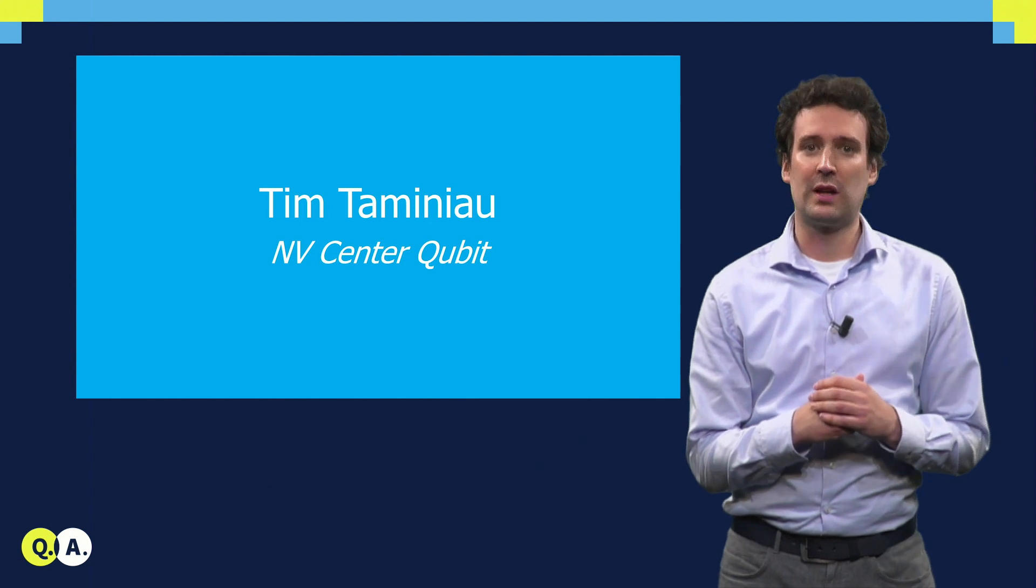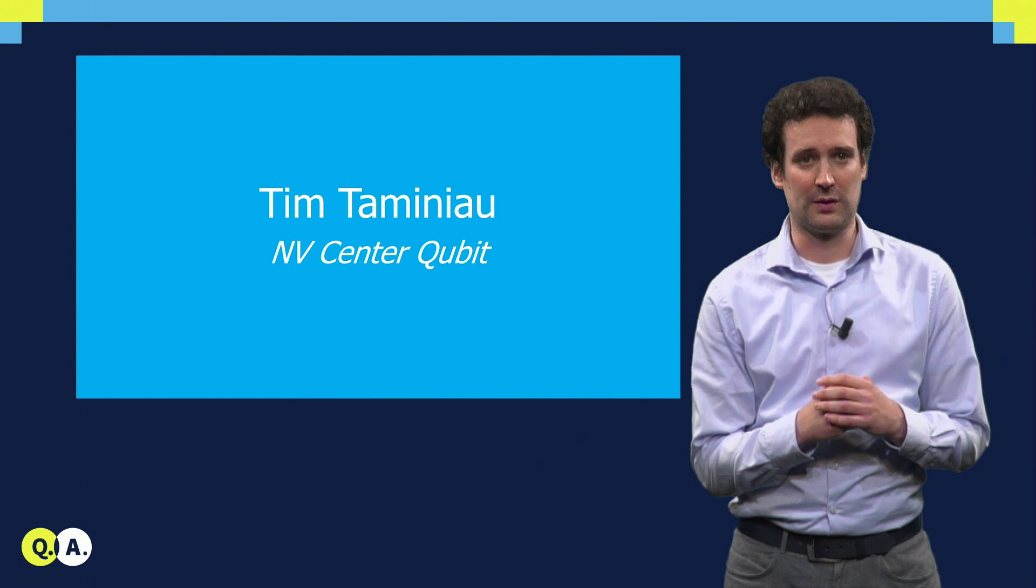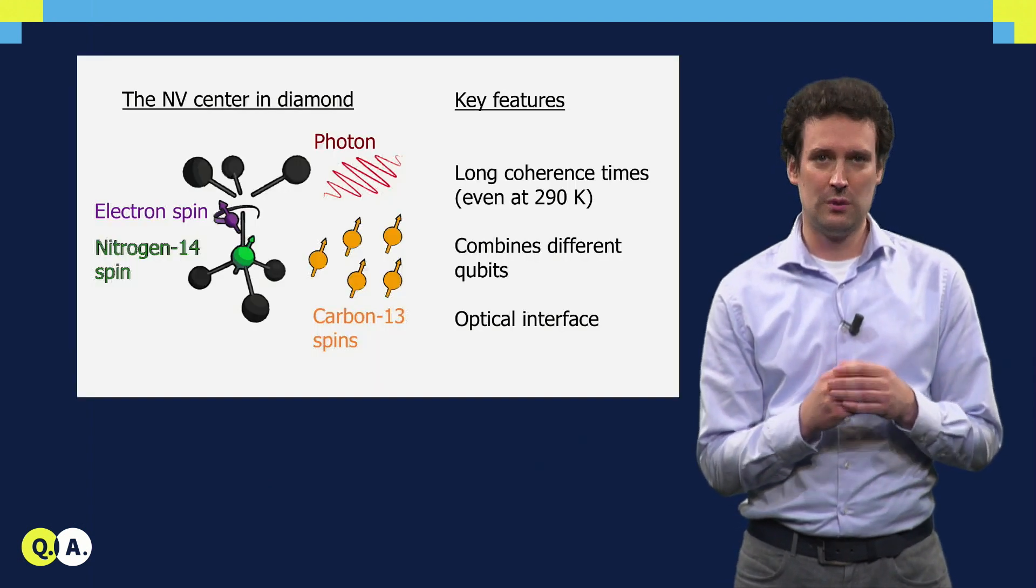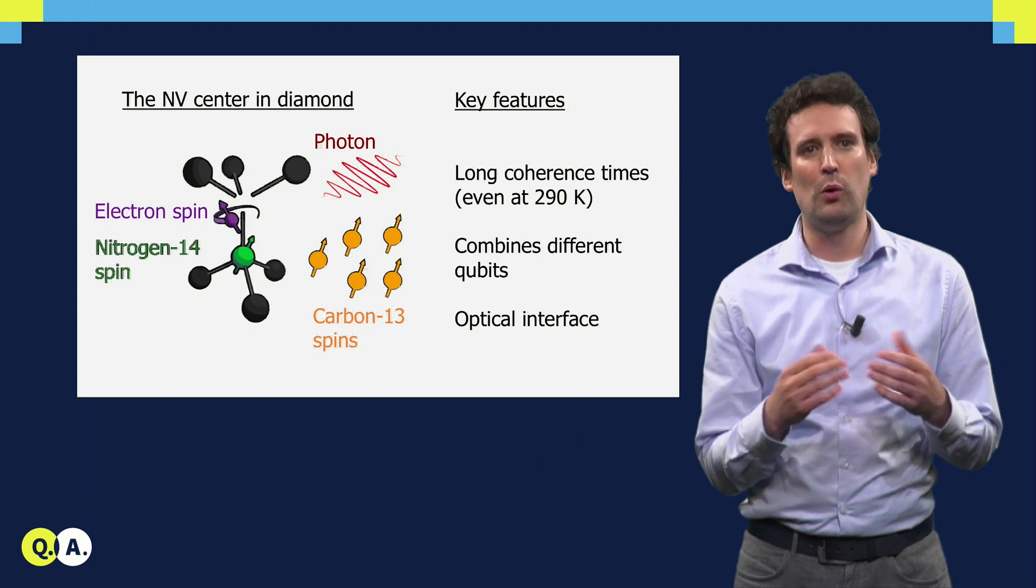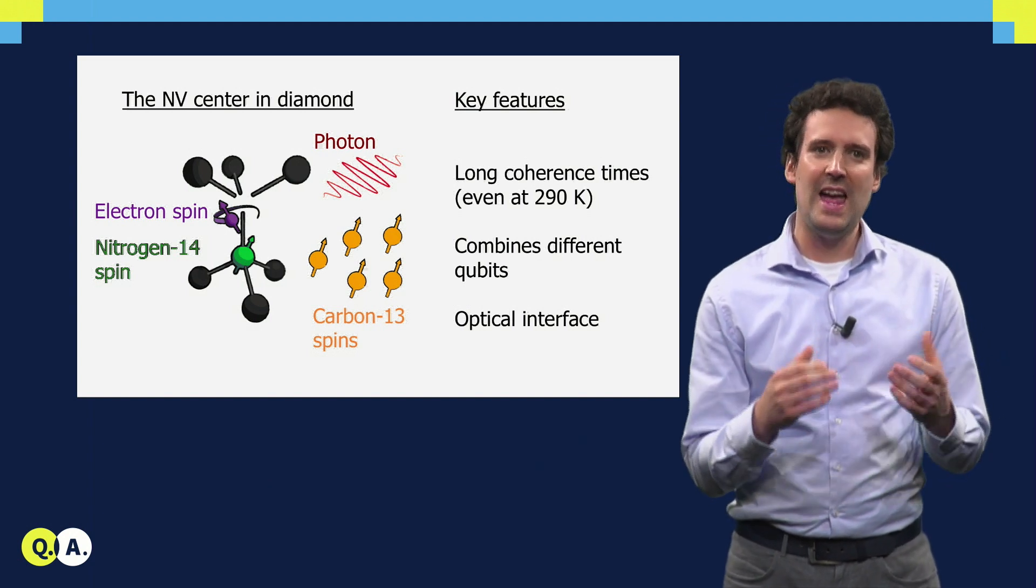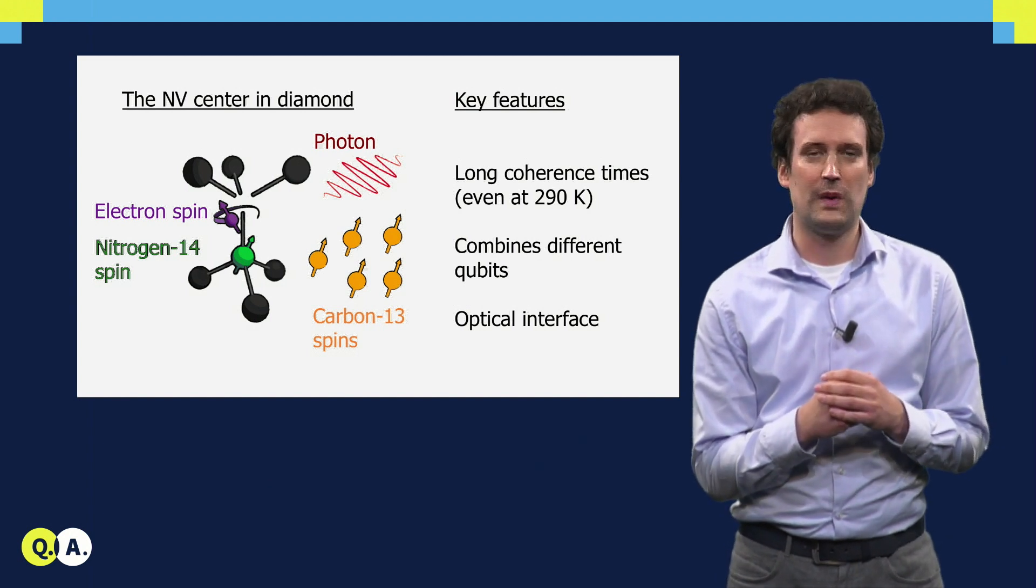Previously we have seen how we can control the electron spin of the NV center in diamond as a qubit. In this lecture we will learn how we can use the NV center to also control multiple nuclear spin qubits, and how we can link NV centers together using photons to create quantum networks.